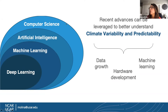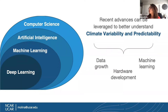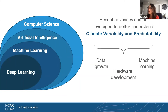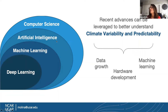To give a broader overview of what machine learning is: machine learning is a subfield of artificial intelligence, and it's actually not a new concept. It was coined in the late 1950s by Arthur Lee Samuel, a computer scientist and pioneer in machine learning, who defined it as the ability of computers to learn from data. Deep learning is a subfield of machine learning consisting of models that use artificial neural networks and are typically several layers deep. Recent advances in deep learning can be leveraged to understand climate variability and predictability.